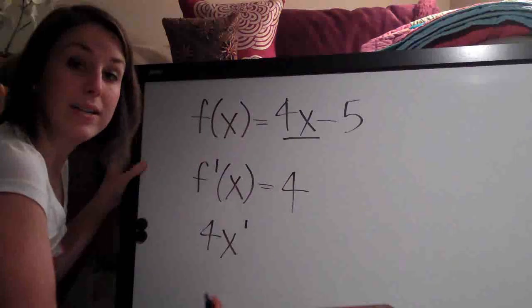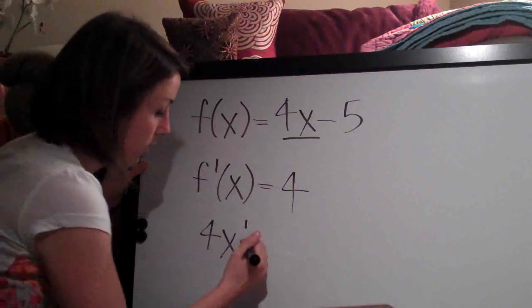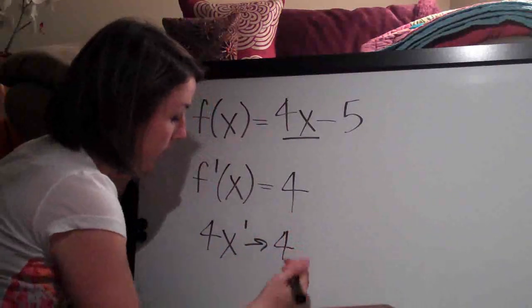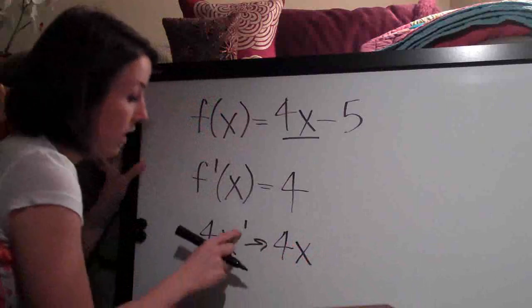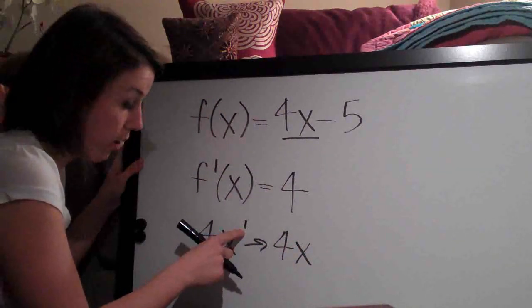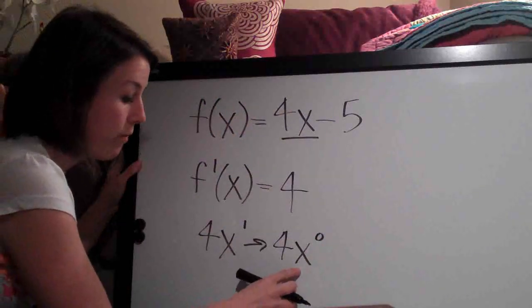The way that we take a derivative is by multiplying the exponent by the coefficient. So this would become 1 times 4 is 4. And then we leave the x and we always subtract 1 from the exponent. So 1 minus 1, so 1 minus 1 is 0. So this is how we would take the derivative.